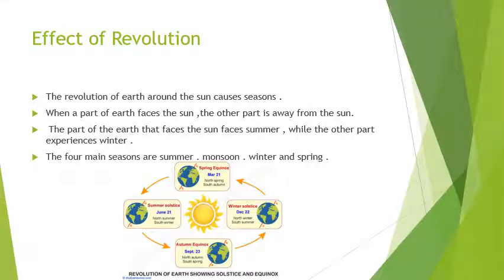Now let's see what are the effects of revolution. This revolution of the earth around the Sun causes seasons. When one part of the earth faces the Sun, the other part is away from the Sun — so it causes summer where the Sun is facing and the other part gets winter. This is how revolution works, and we see its effects by causing the seasons: summer, winter, spring, and rainy.